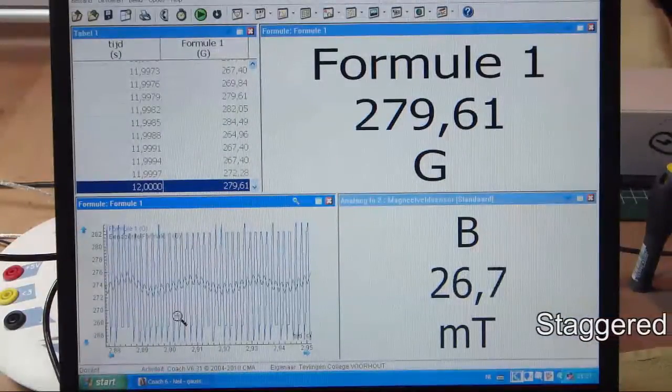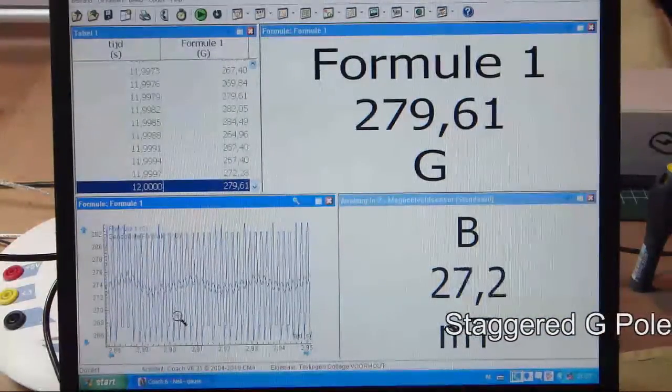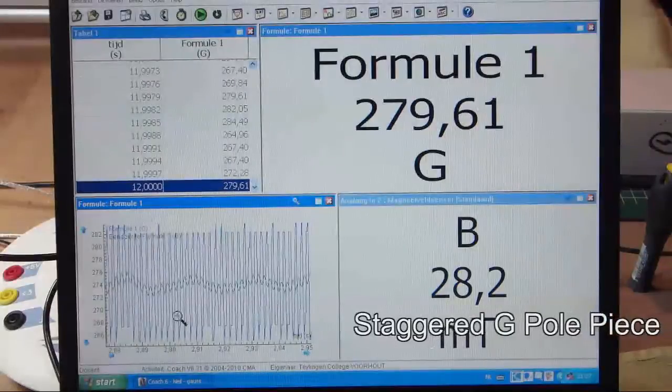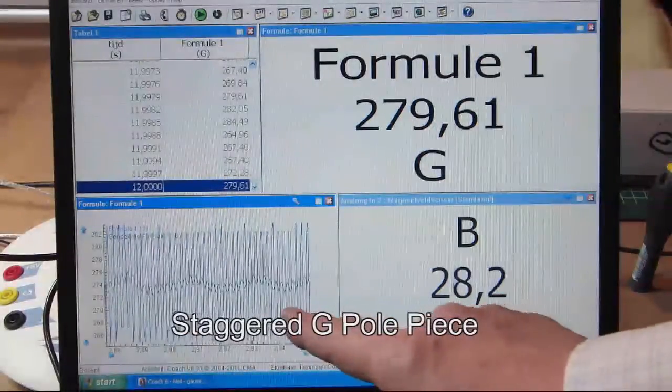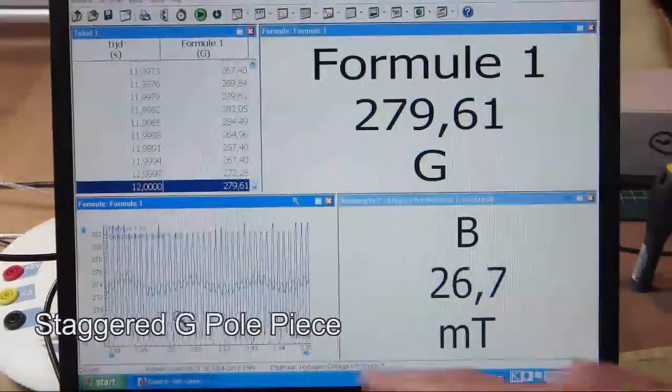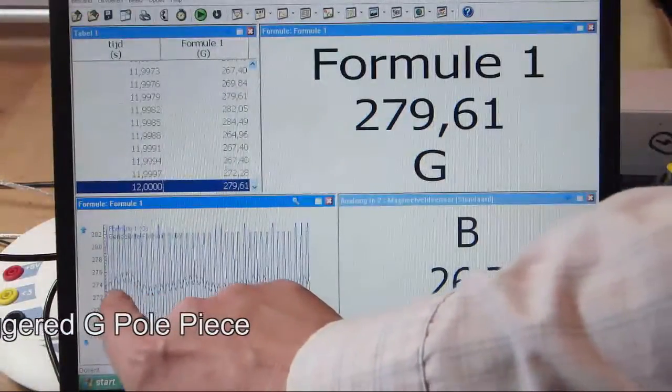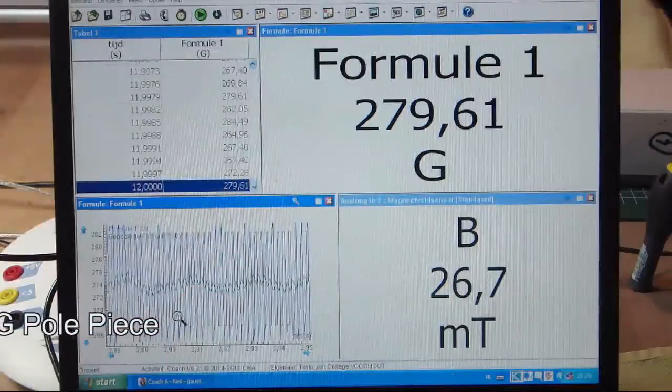Funnily enough, this was one of the staggered pole pieces and it's actually measuring lower. So this is the G string, it's my G string, and it's 275.